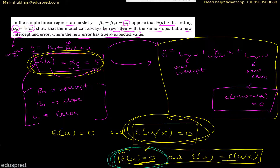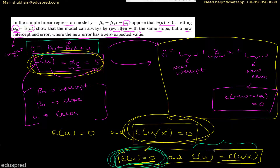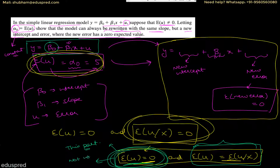Right now we are only talking about the first condition — expected value of u equals zero. The meaning of the question is: even if you have a model where the expected value of u is not equal to zero, can we transform the model so that the expected value of the error term comes out to be zero? And the answer is yes, we can.